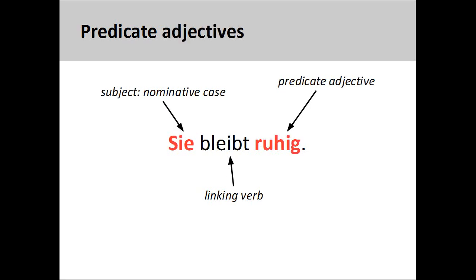In the sentence you see here, sie bleibt ruhig, she remains calm, the verb bleibt simply links the subject with a state of being. Since no real action is depicted, both the subject and predicate are in the nominative case.